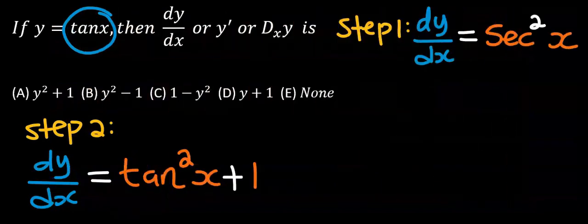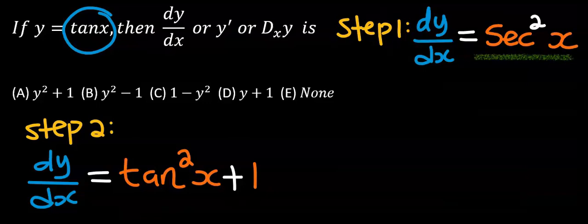In step number 2, instead of writing sec squared x for my dy/dx, I can replace it now with tan squared x plus 1, which I got from the basic trigonometric identity functions table.